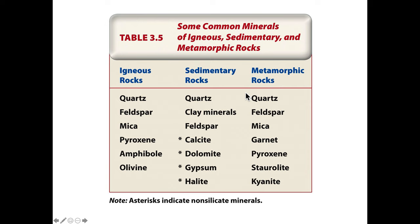With feldspar, we can have it present in igneous rocks. We can also have a considerable amount of feldspar in an arkosic sedimentary rock, and feldspar is common in metamorphic rocks as well — so again we have to toss that out. Some of these feldspars are going to weather and convert into clay minerals, so the presence of clay minerals provides some clue as to what the precursor mineralogy was. Micas are commonly found in igneous, sedimentary, and metamorphic rocks, so that's not going to help either.